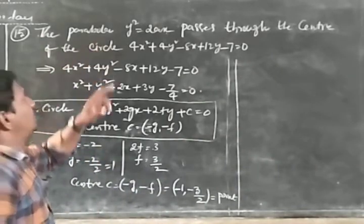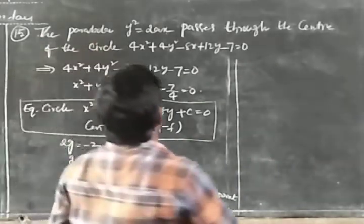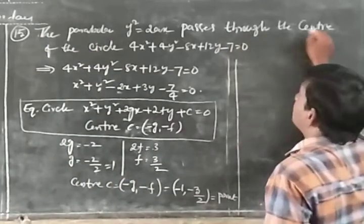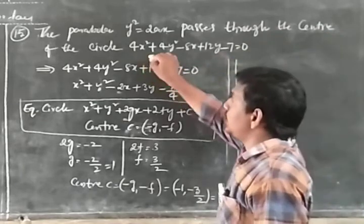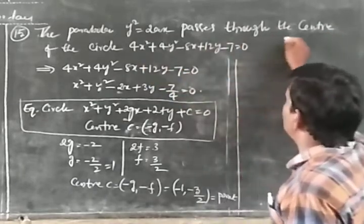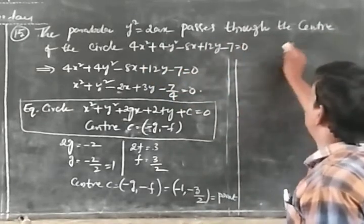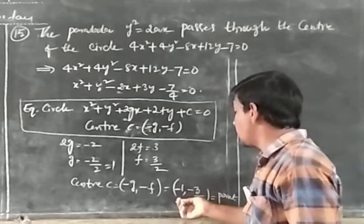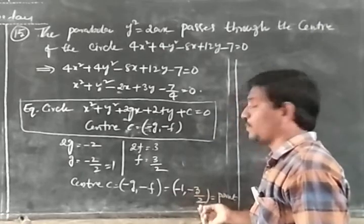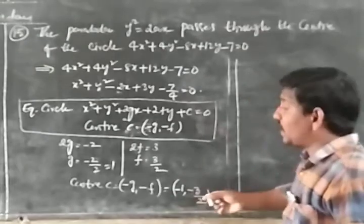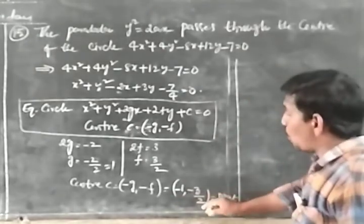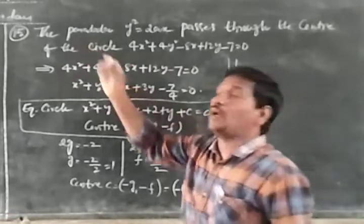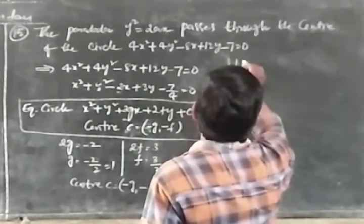The parabola y² = 2ax passes through the center of the circle. The center is (−1, −3/2). So this point (−1, −3/2) lies on the parabola y² = 2ax.